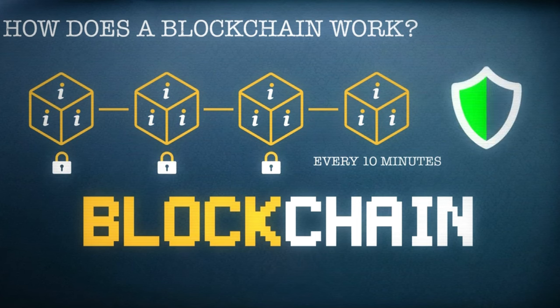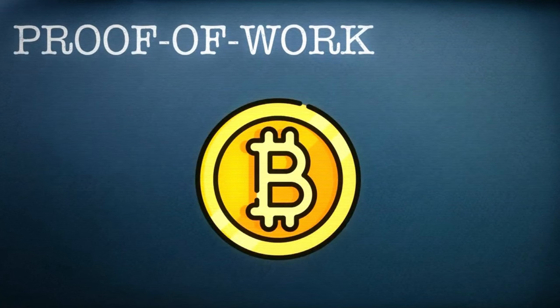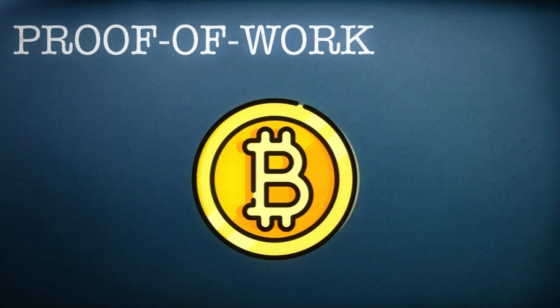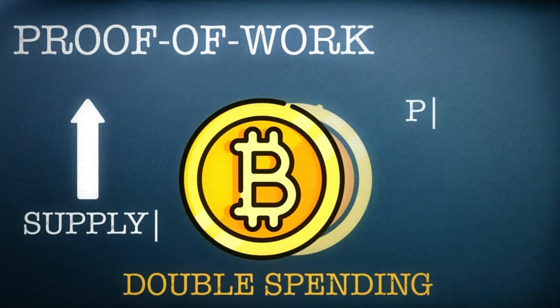There are several types of blockchain out there. The most common is proof of work, and this is the one that's used by Bitcoin's network. Proof of work helps to eliminate the risk that the same cryptocurrency can end up being spent twice, something that would inflate supply and cause prices to fall.